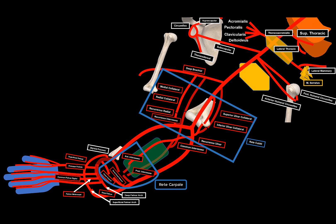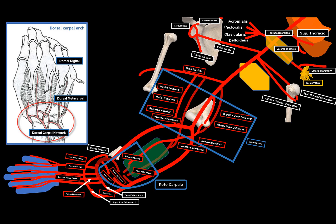The dorsal part of the hand is supplied by the dorsal carpal network, also called the dorsal carpal arch, which gives off dorsal metacarpal arteries that divide into dorsal digital arteries. That covers the complete arterial blood supply of the upper extremities. The more you study it, the easier it becomes.